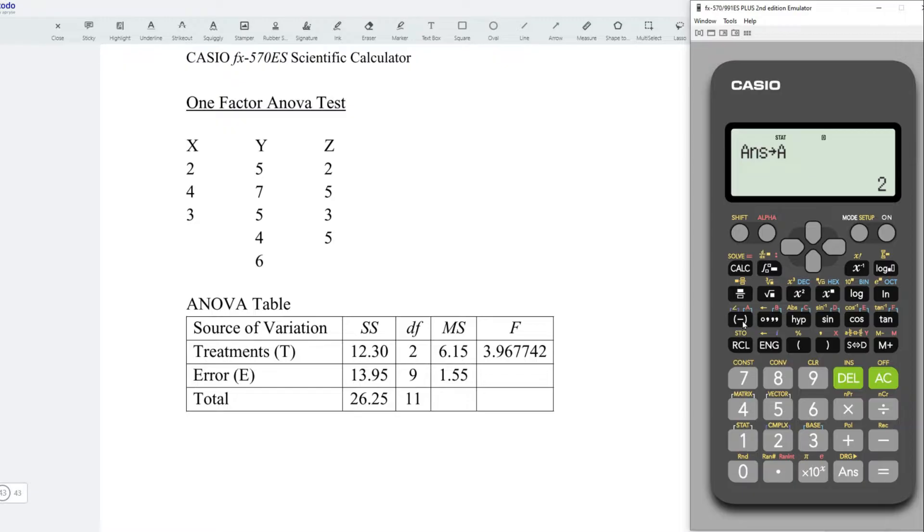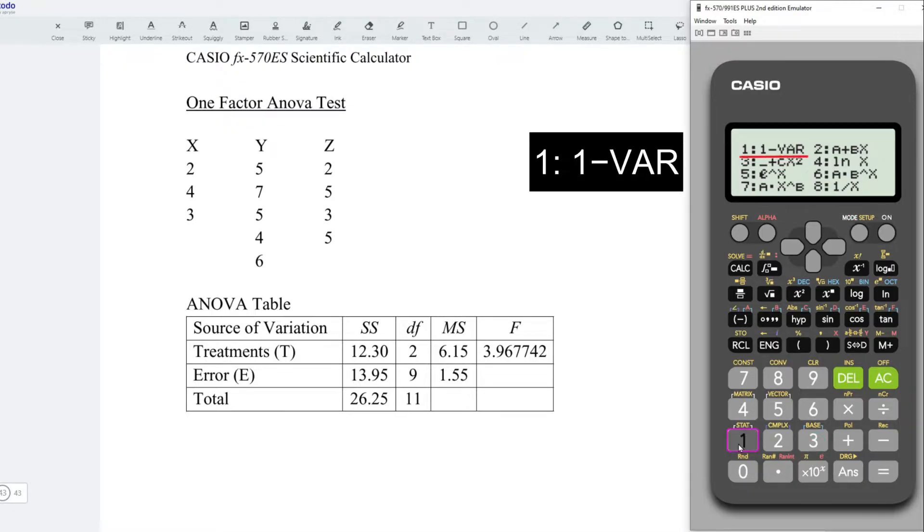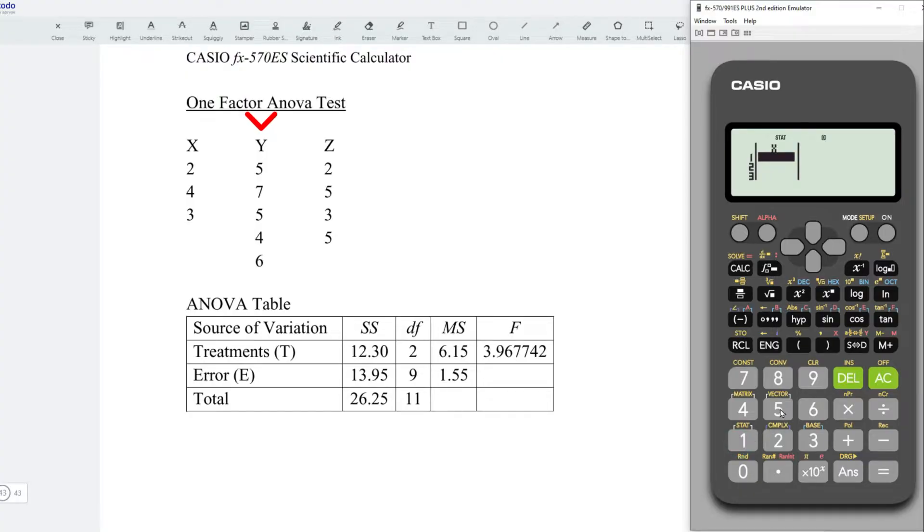For the next treatment, treatment Y, again press on mode, statistic, one variable. Enter the values. We have 5 equal, 7 equal, and so for the rest of the values. Press on AC.